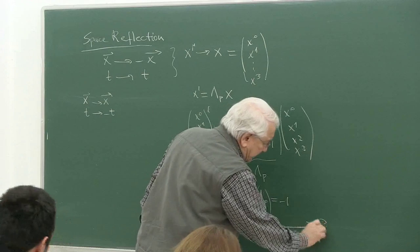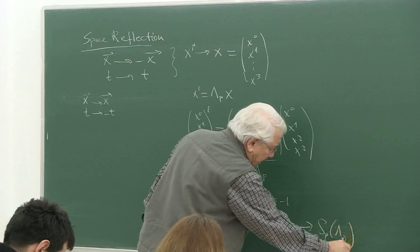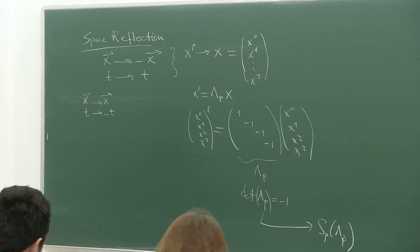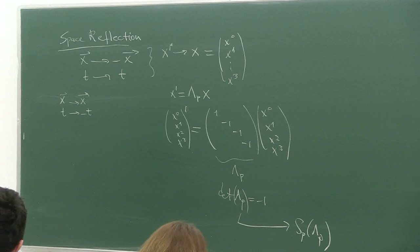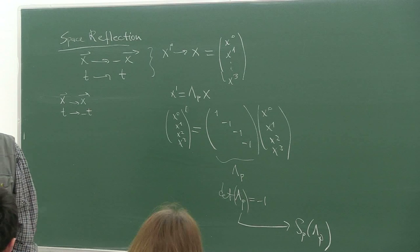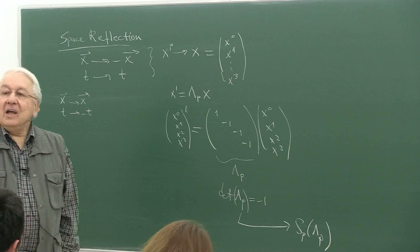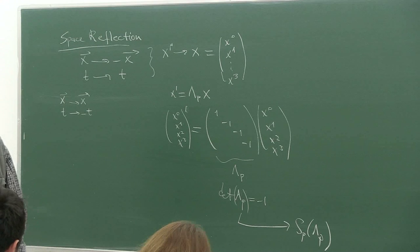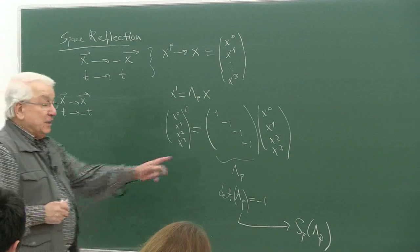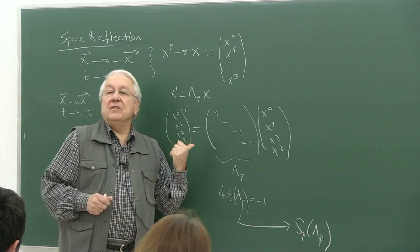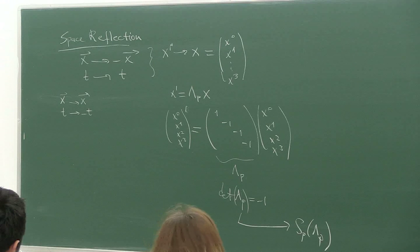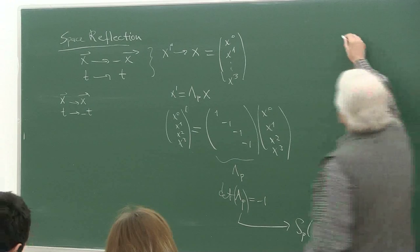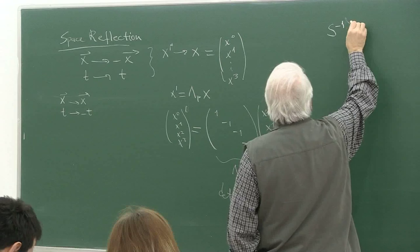If we now denote the expression in the spinor space associated with Λ_P as S_P, the covariance condition is analogous to what we worked out for the proper Lorentz transformations. Lambda_P in matrix notation has that specific form — it is not the metric g_{μν}, even though it looks similar. S is the one which corresponds to Λ_P in the spinor space, and the covariance condition must hold.